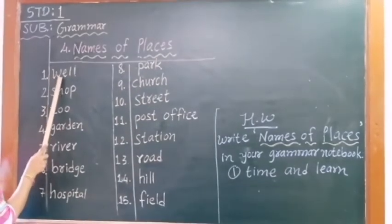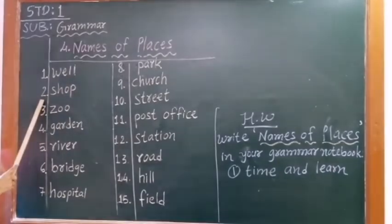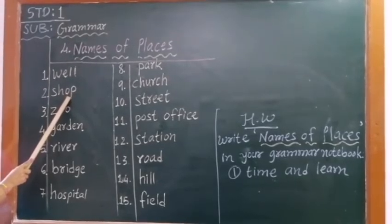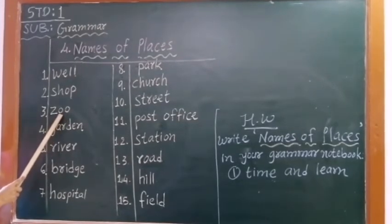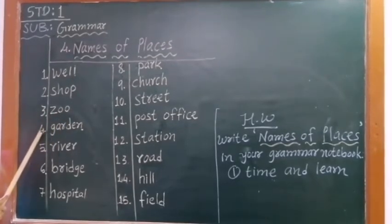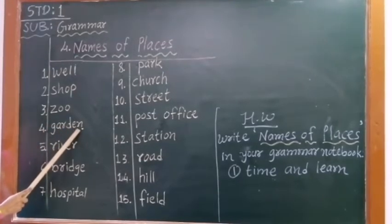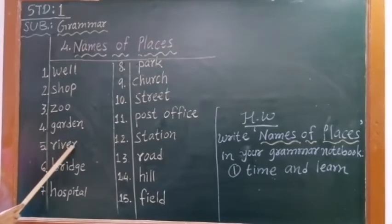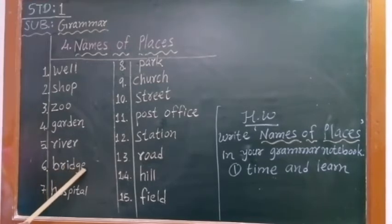Number 1, W-E-L-L, well. Number 2, S-H-O-P, shop. Number 3, Z-O-O, zoo. Number 4, G-A-R-D-E-N, garden. Number 5, R-I-V-E-R, river. Number 6, B-R-I-D-G-E, bridge.